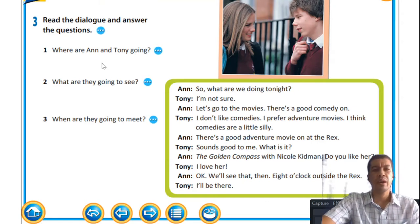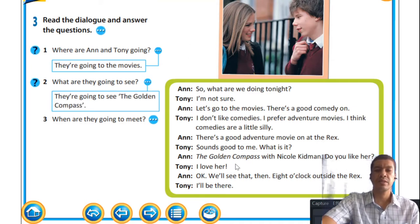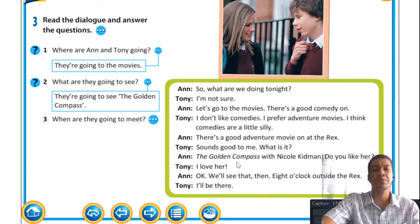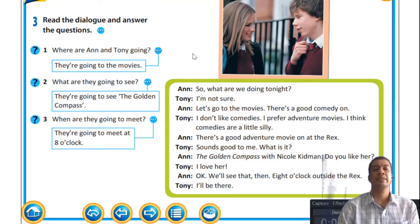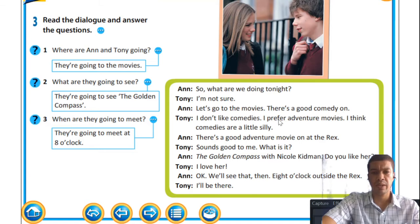Now read the dialogue and answer the questions. Where are Ann and Tony going? As we can see in the dialogue, they made plans to go to the movies. What are they going to see? They are going to see The Golden Compass with Nicole Kidman — though it might change if there are better options. Tony really enjoys Nicole Kidman's movies, so he's a huge fan. When are they going to meet? They are going to meet at eight o'clock in the evening.